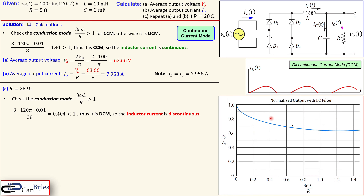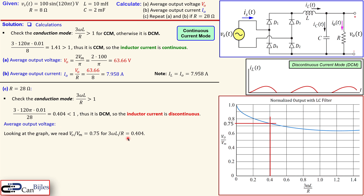We can use the normalized output graph for the full wave rectifier with LC filter. The horizontal axis shows the ratio 3·ω·L / R and the vertical axis shows the normalized average output voltage V0 / Vm. For our value of approximately 0.4 on the horizontal axis, the intersection with the curve gives approximately 0.75. So V0 / Vm = 0.75, meaning V0 = 0.75 × 100 = 75 volts.